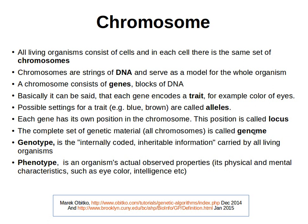The complete set of genetic material — all the chromosomes — is known as the genome. We have two things: genotype and phenotype. The difference is that the genotype is internal and the phenotype is external. The genotype is the internally encoded inheritable information carried by all living organisms. The phenotype is an organism's actual observed properties — physical characteristics, mental characteristics, and so on.